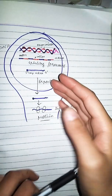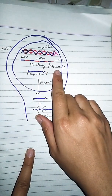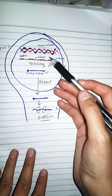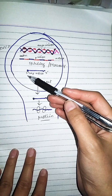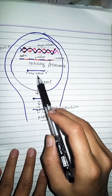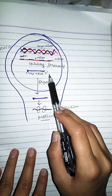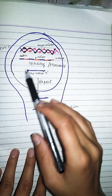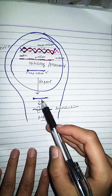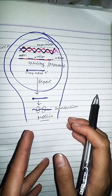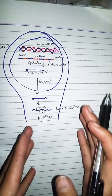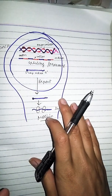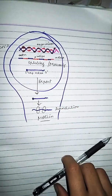Messenger RNA کی formation میں splicing یا processing ہوتی ہے — intron کو remove کر دیا جاتا ہے۔ 5 prime cap اور 3 prime tail بھی add ہوتی ہے۔ پھر messenger RNA کو nucleus سے export کر کے ribosomes کے پاس بھیجا جاتا ہے translation کے process کے لیے، جس سے protein کی synthesis ہوتی ہے۔ یہ diagram gene splicing یا split gene کے بارے میں تھی۔